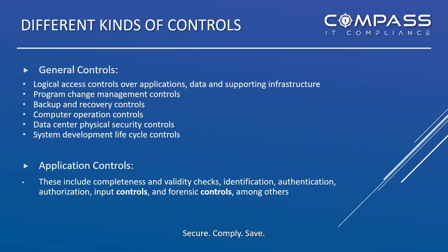Backup and recovery is a major control in any environment. Having a solid backup program — policy, procedures, the whole nine — is especially important today when it comes to preempting ransomware attacks. Computer operations controls cover systems running on-prem or cloud-based, including updates and patch management. Physical controls must be around sensitive areas of a facility, particularly data centers where racks and infrastructure are stored and your most important information resides.